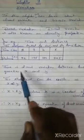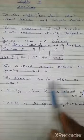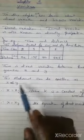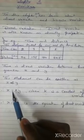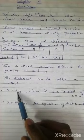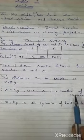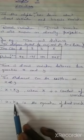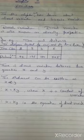There is direct variation between two quantities x and y. This can be written as x varies y, meaning x is proportional to y. When we remove the variation symbol it becomes x is equal to ky, where k is the constant of variation. So x equals ky is the equation of direct variation.